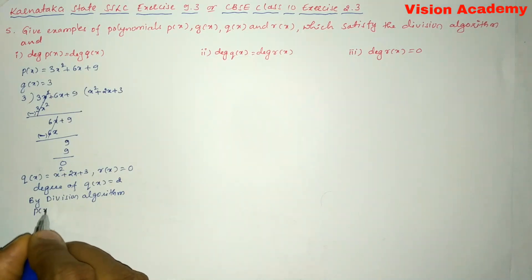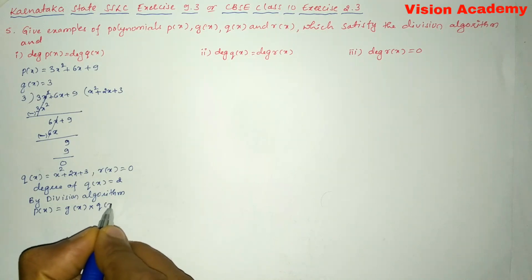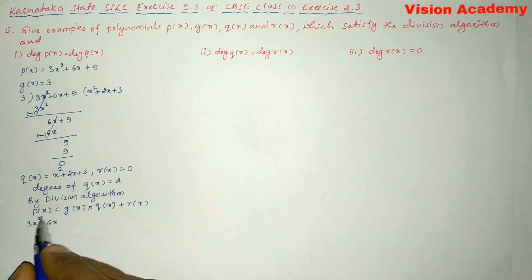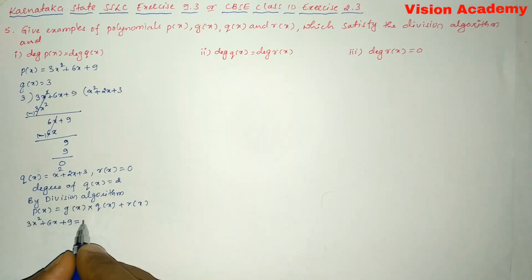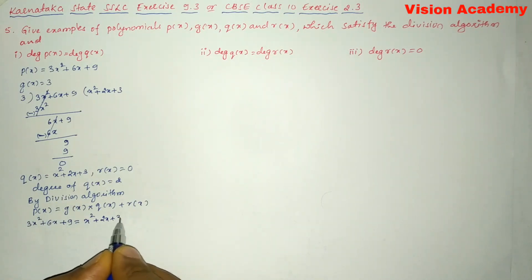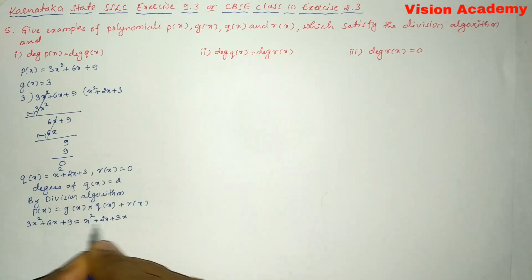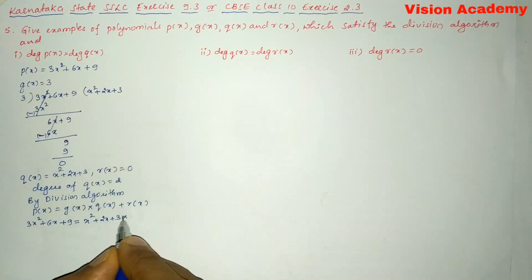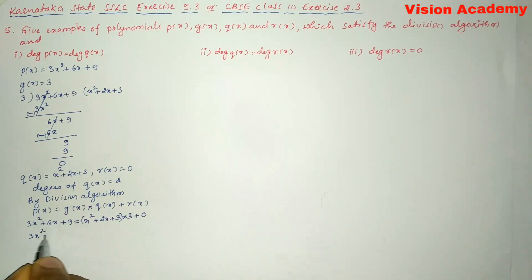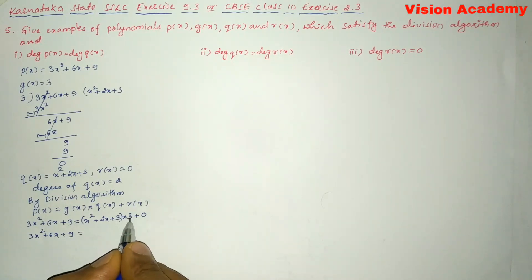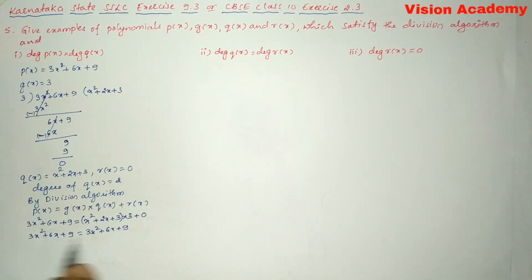By the division algorithm we can write p(x) = g(x) × q(x) + r(x). So 3x² + 6x + 9 = 3 × (x² + 2x + 3) + 0. Multiplying 3 inside the bracket gives 3x² + 6x + 9, so LHS equals RHS. The division algorithm is satisfied for Roman number 1.